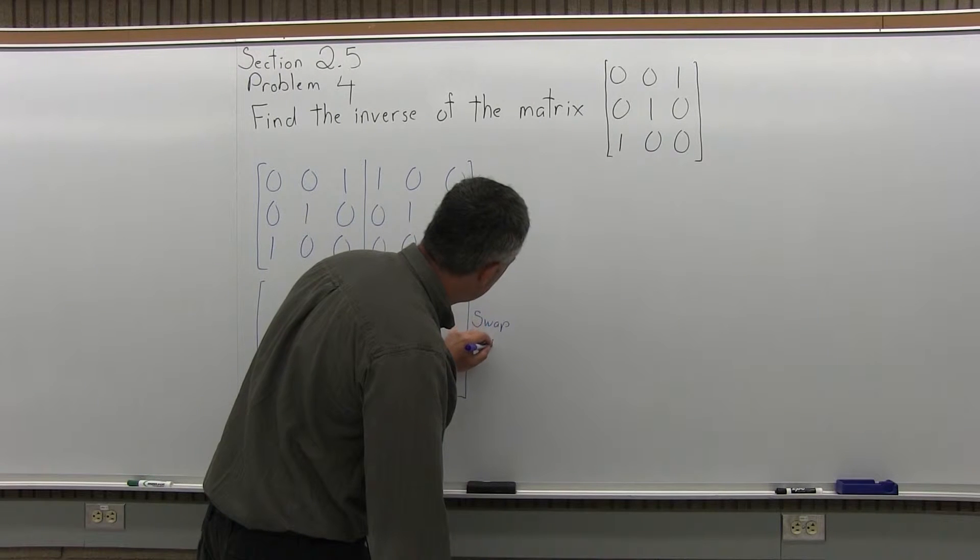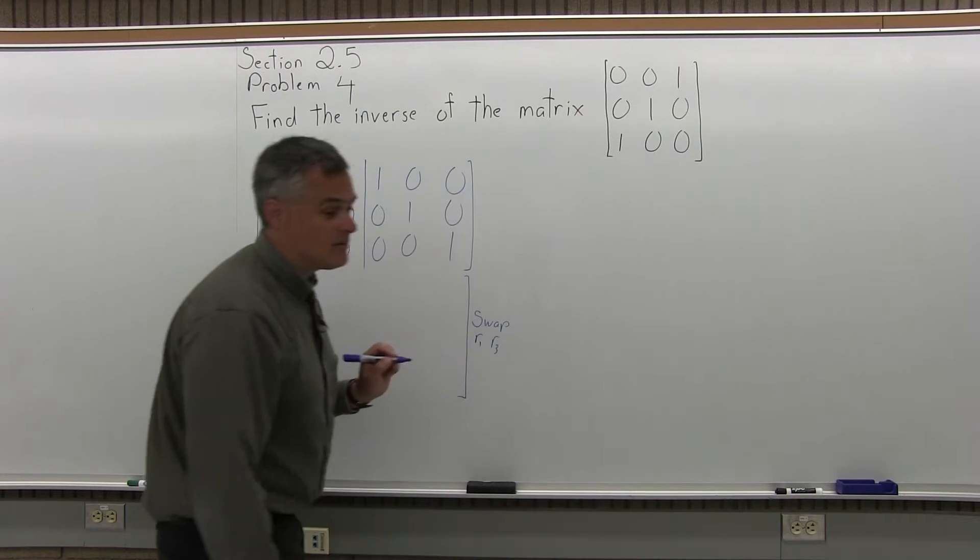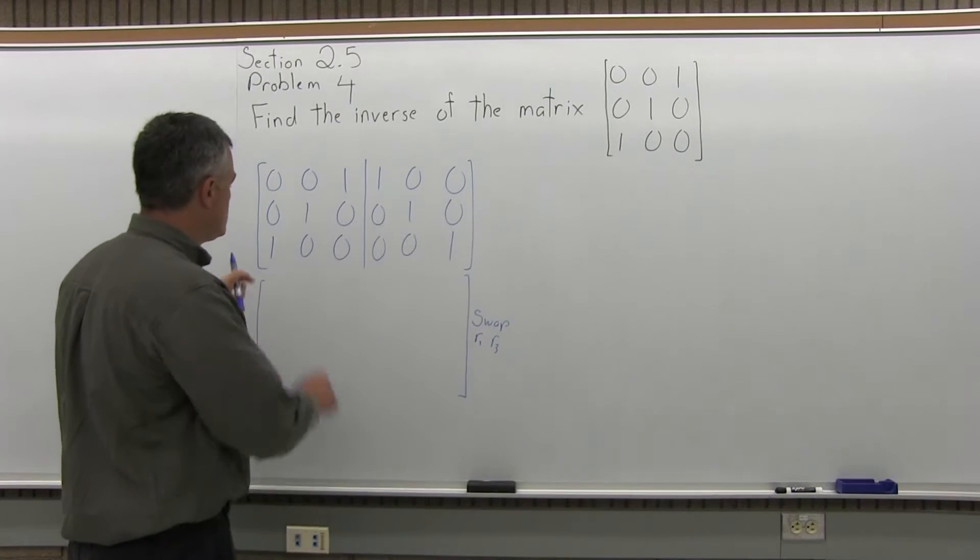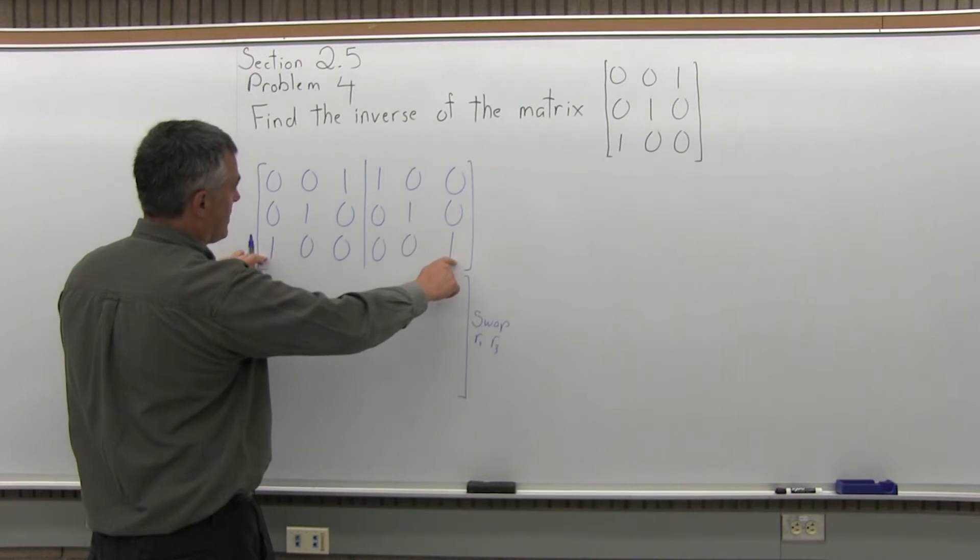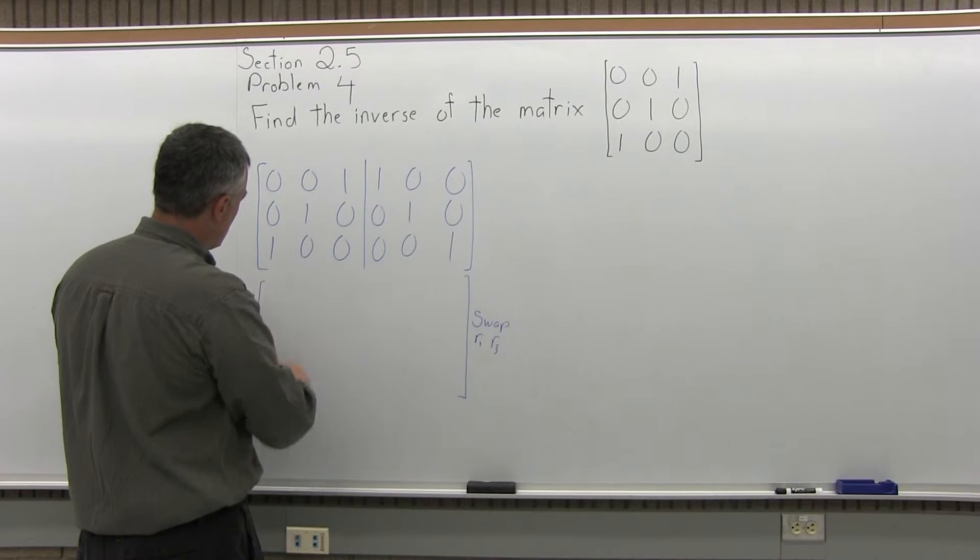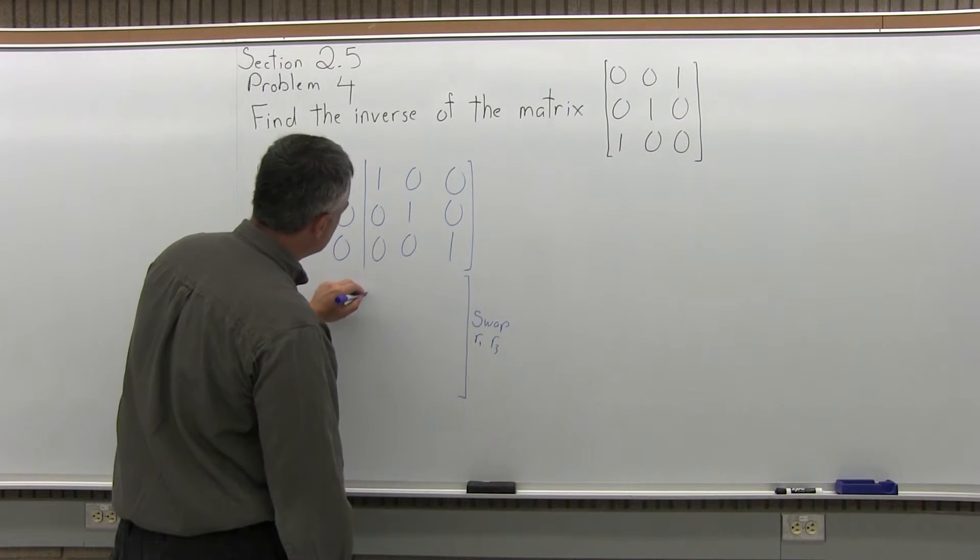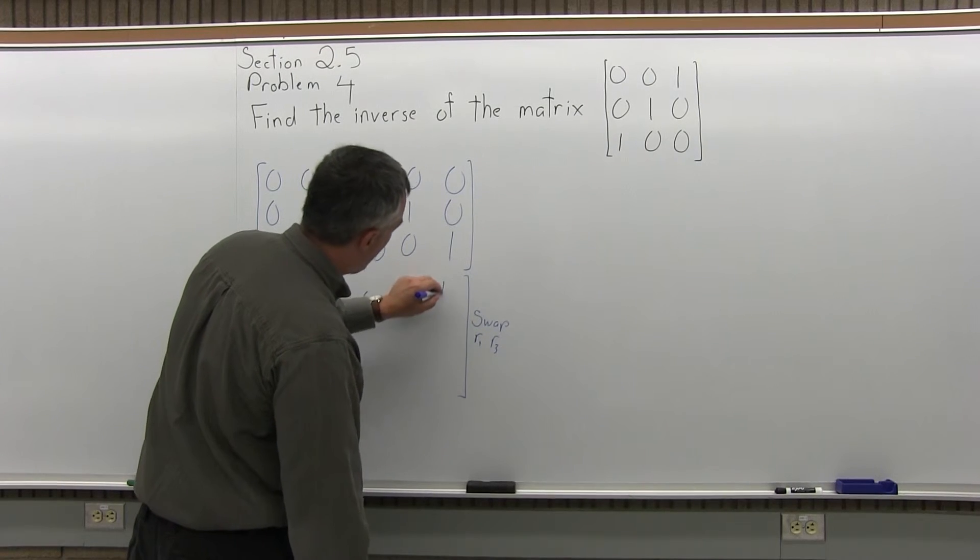I'm going to swap the top row and bottom row, leave the middle row right where it is. So this bottom row will come up to the top in my new matrix. So the top row of my new matrix will be 1, 0, 0, 0, 0, 1.